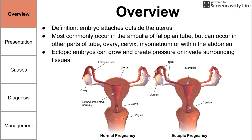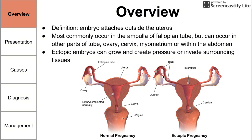Ectopic embryos can grow and create pressure or invade surrounding structures. If an ectopic pregnancy grows inside the tube, it can block the tube and create pressure on either side, affect surrounding organs and structures, and cause pain, pressure, or bleeding.